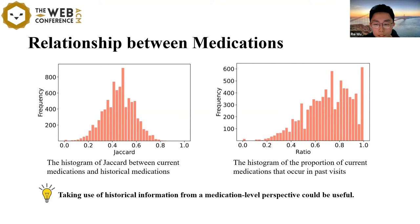For each visit, we calculate the proportion of the medications that have appeared in history and the Jaccard between current medications and past medications. We can see that in most visits, a large portion of prescribed medicines have been recommended before. Inspired by this, we rethink about taking use of historical information from a medication-level perspective. The challenge here is how to accurately determine whether a historical medication is still relevant at the present.